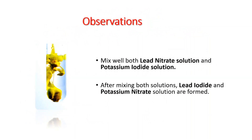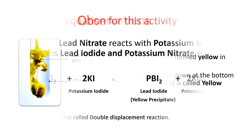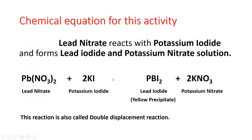After some time we can see a precipitate has formed. This precipitate settles at the bottom of the test tube, which is yellow in color, and this precipitate is called lead iodide. Here we can see the chemical equation for this activity: lead nitrate reacts with potassium iodide and forms two main products — lead iodide and potassium nitrate solution. Lead iodide, which is yellow in color, is called the yellow precipitate.